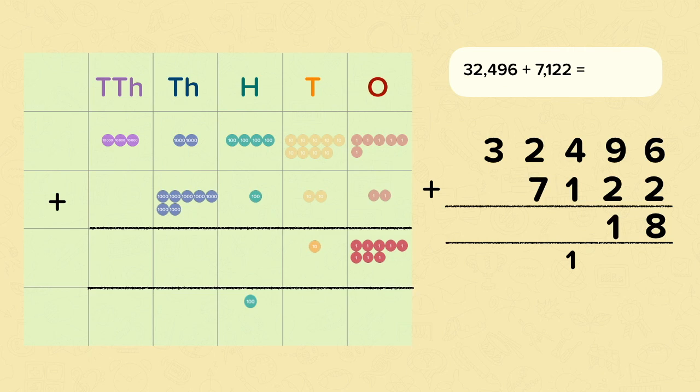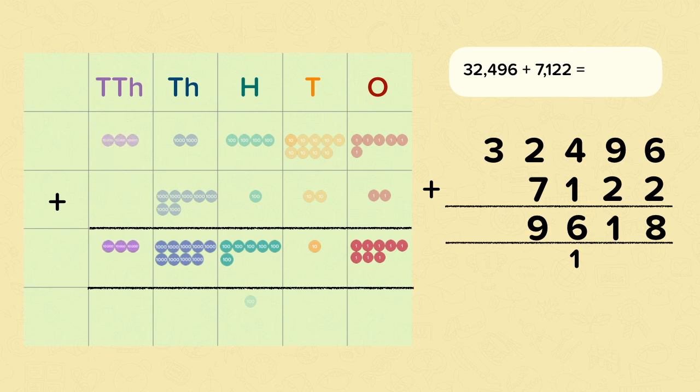So now we move on to the hundreds. Four hundred add one hundred add the extra hundred that we've exchanged over from the tens. We've got six hundreds now. Onto the thousands, two add seven, that's nine. So now onto the ten thousands. We've only got three. We don't need to add anything in this column. So it's just three. So our answer is 39,618.